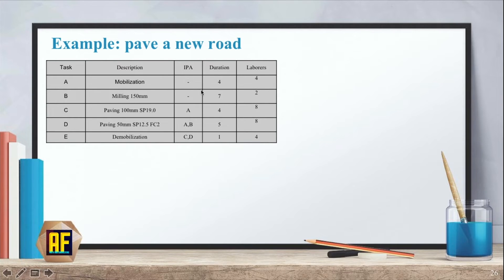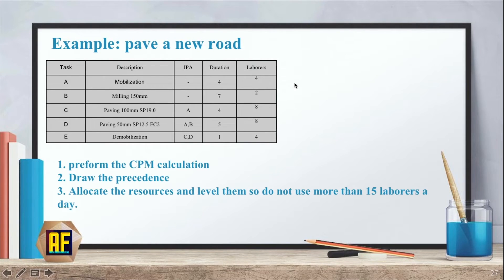So in task A, when we mobilize, it will take us four days and we need four guys or girls to perform the task. So the first thing we need to do, we need to perform the CPM calculation. If you don't know how to do that, please go to the video before. There is an excellent example. The second thing we need is to draw the precedence diagram. And the third thing is actually a condition.